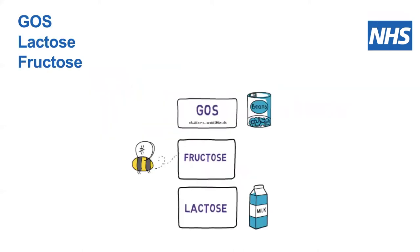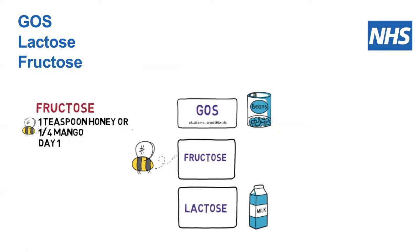If we look at GOS — which stands for galacto-oligosaccharides — as well as lactose and fructose, these three FODMAPs work as a group. If you introduce one of these FODMAPs and tolerate it, then you will probably be able to tolerate the others in that particular food group.